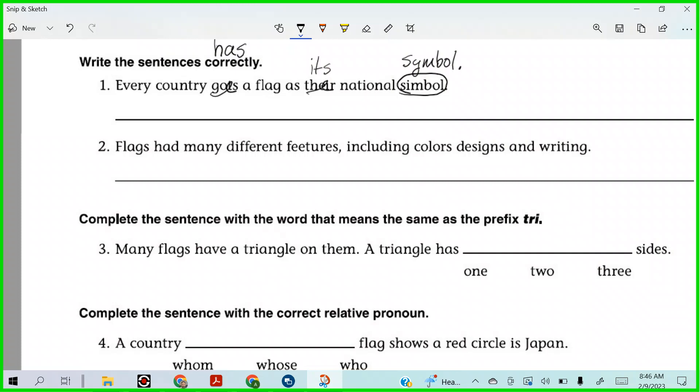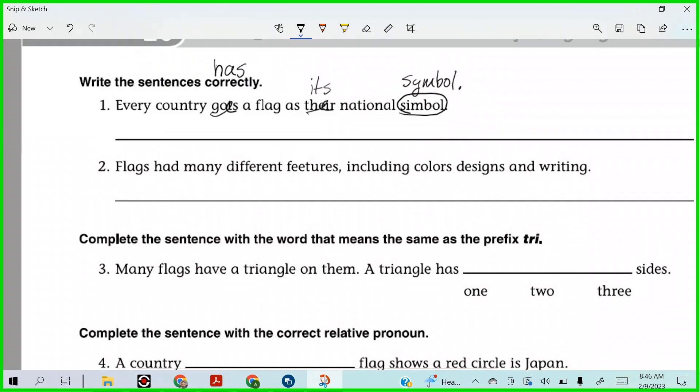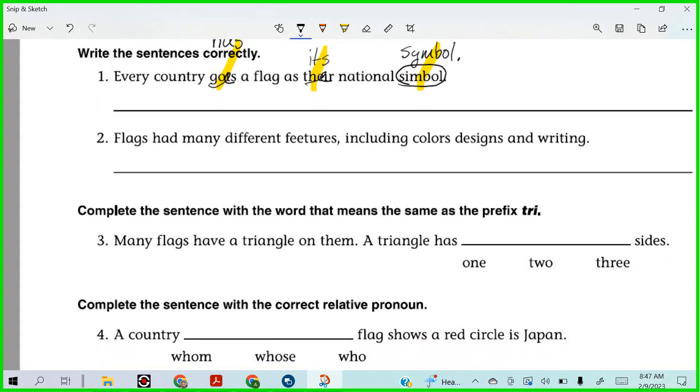Alright, you guys see anything else? Every country has a flag as its national symbol. Alright, so for this one, we have one, two, three corrections there. Alright, let's try another one. It says, flags had many different features, including colors, designs, and writing.